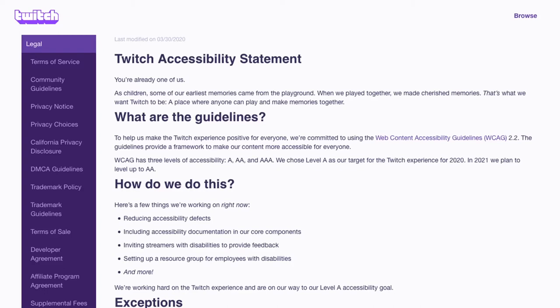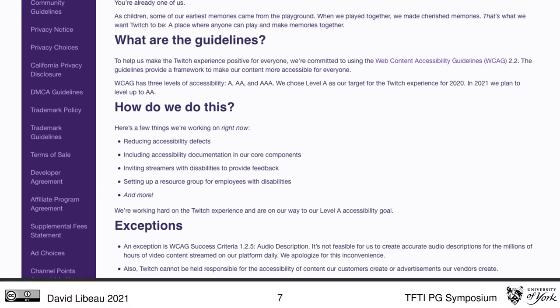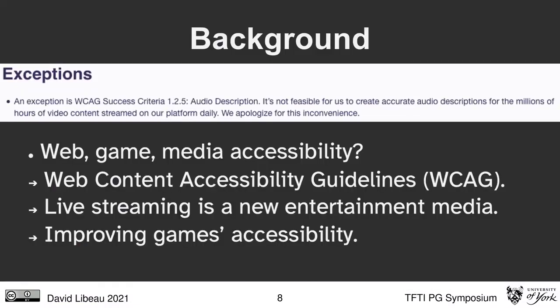Linking accessibility and live streaming, we find the Twitch accessibility statement — a webpage where Twitch states what they are doing in terms of accessibility. Scrolling down, we find an exception: WCAG success criteria for audio description is not feasible for them to create accurate audio description for the millions of hours of video content streamed on their platform daily.